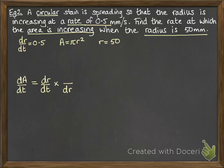And we need an extra dA in there so that we end up with dA over dt when those drs cancel out. So we need to work out dA by dr by differentiating A, and we get 2 pi r.